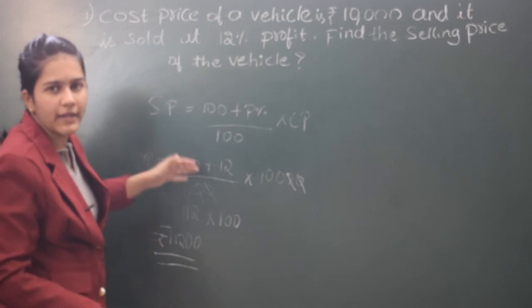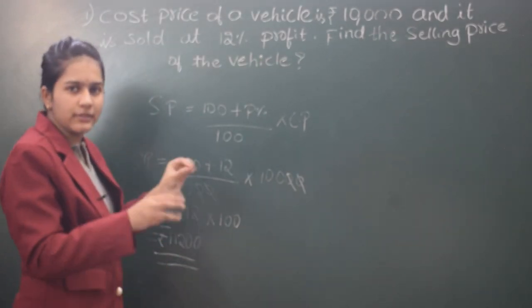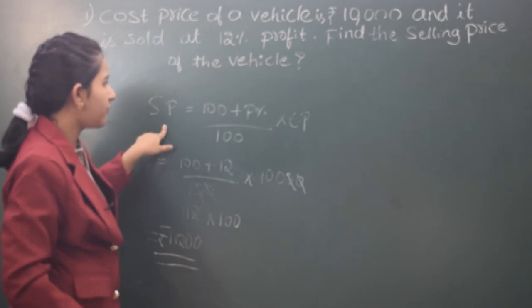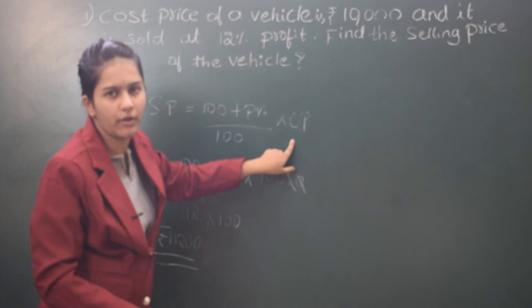So in this way you can find the selling price of the vehicle or any other things in different questions. So the selling price formula is 100 plus profit percentage divided by 100 into cost price.